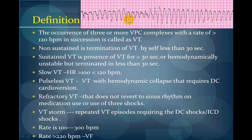Salvos are non-sustained. If there are only three complexes — triplets — that is also non-sustained. Sustained VT is when the VT lasts more than 30 seconds. This can be hemodynamically stable or unstable, but by and large when VT lasts very long the person will become hemodynamically unstable. Even if a person is hemodynamically unstable and the VT terminates in less than 30 seconds, it should still be treated as sustained VT. Sustained VT lasting more than 30 seconds invariably leads to instability. If the rate is between 100 to 120, we call it slow ventricular tachycardia.